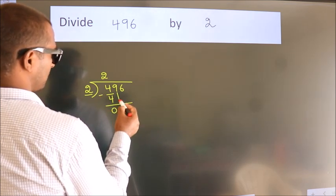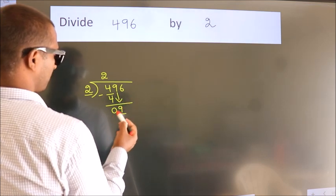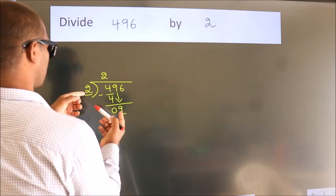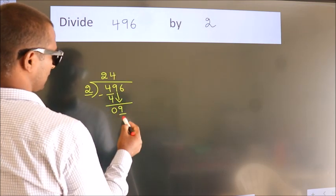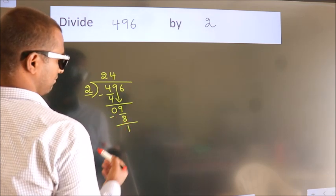After this, bring down the beside number. So 9 down. A number close to 9 in 2 table is 2 times 4, which is 8. Now we subtract. We get 1.